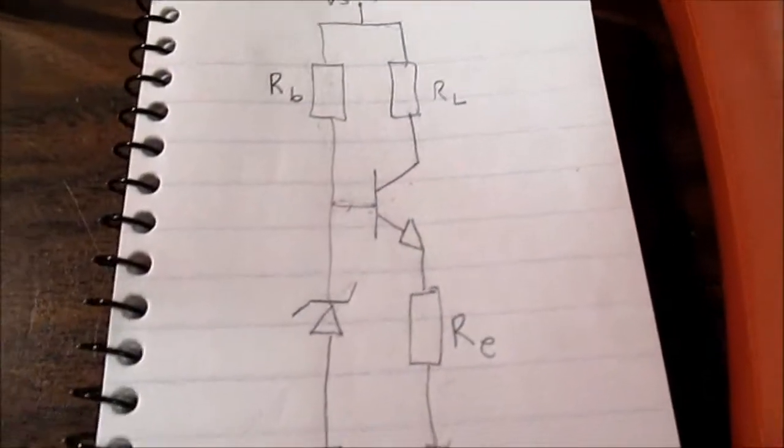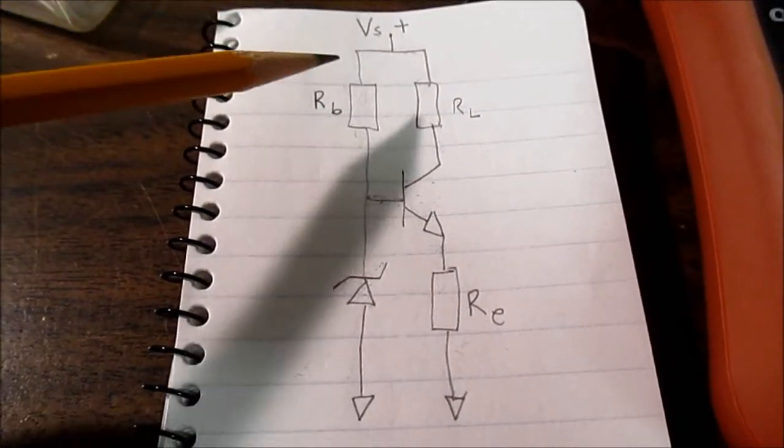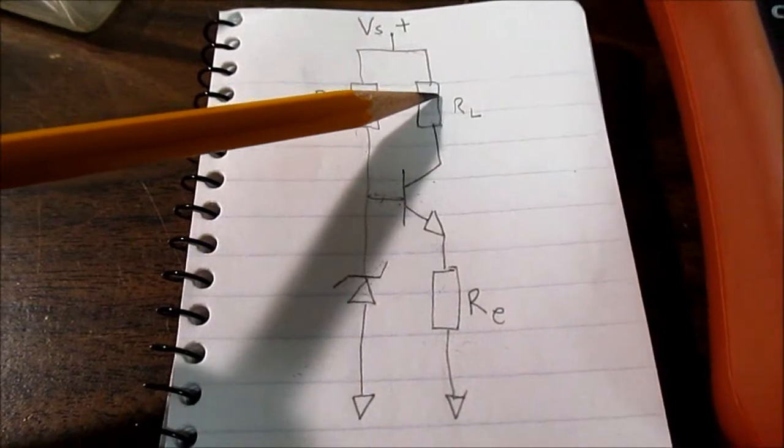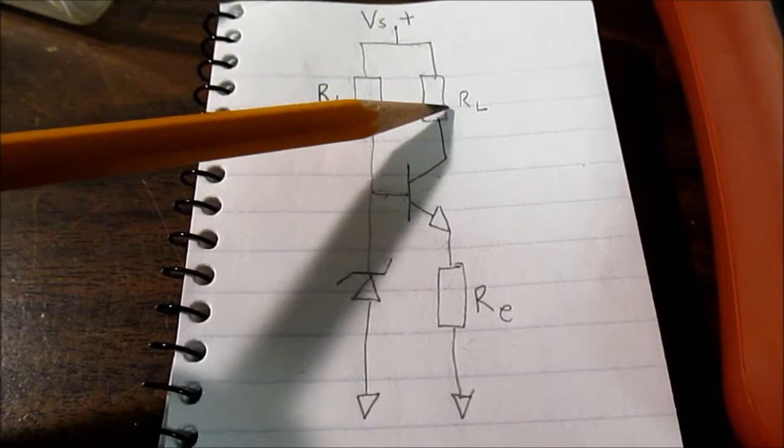So changing the load and/or the supply voltage will change the current through the circuit. So if we put a constant current regulator in here, we can keep the current through our load constant if the supply voltage or the load itself changes.